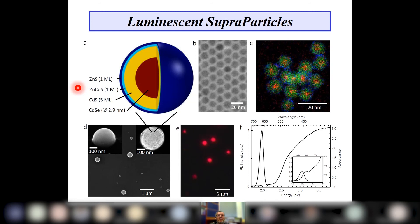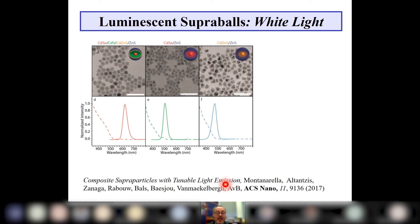However, these quantum dots do couple strongly to the optical properties of their neighbors as determined by the refractive index. One application of these strongly luminescent supraparticles is that you can mix different-color supraparticles — semiconductors with different sizes and therefore different emission wavelengths — to make white-colored materials. These are used in relatively expensive televisions, and processing supraparticles, which are much larger, is much easier than handling individual quantum dots. This work was done by Federico Montanarella.